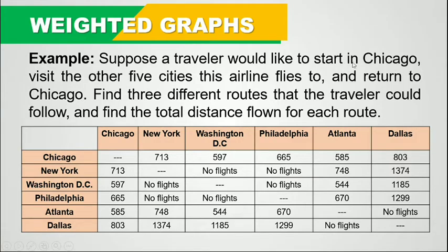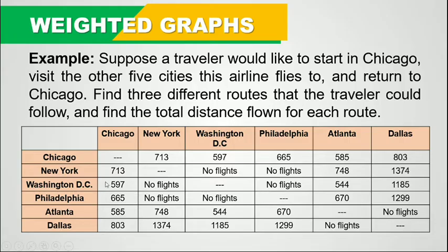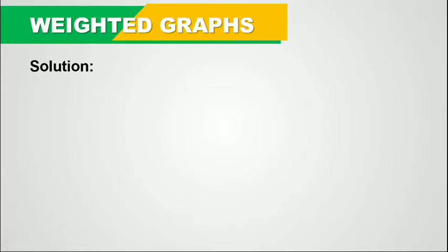This is an example of a Hamiltonian circuit because we start in Chicago and return to the same location — Chicago — while passing through all five cities. So the road we need is a Hamiltonian circuit. This is the table presenting the five cities with their corresponding number of miles. The numbers in these rows and columns are in miles.